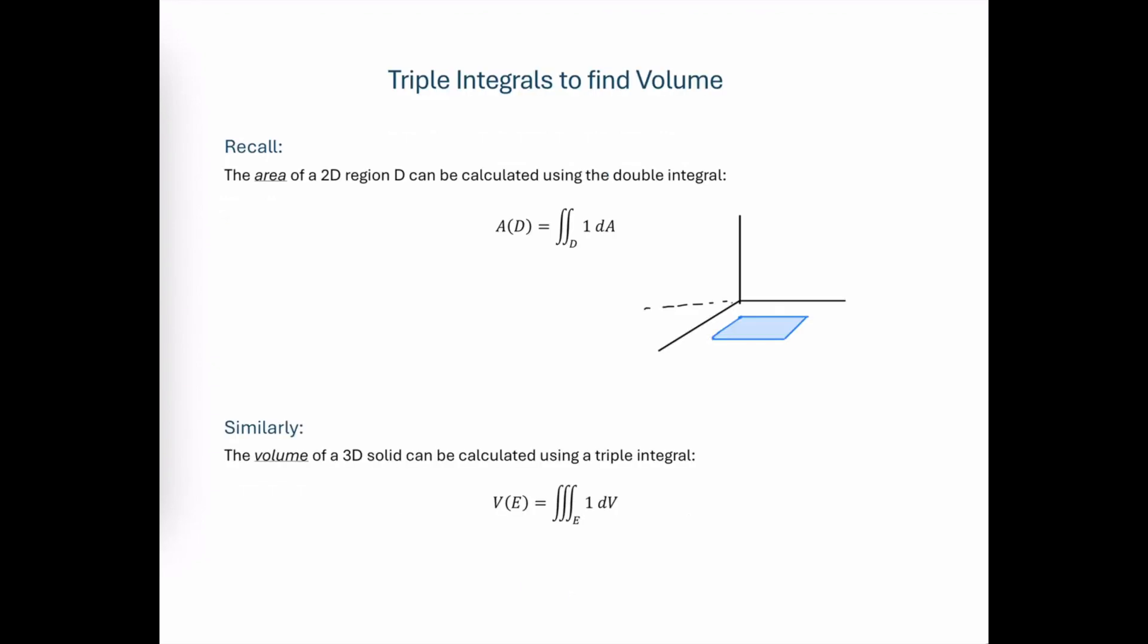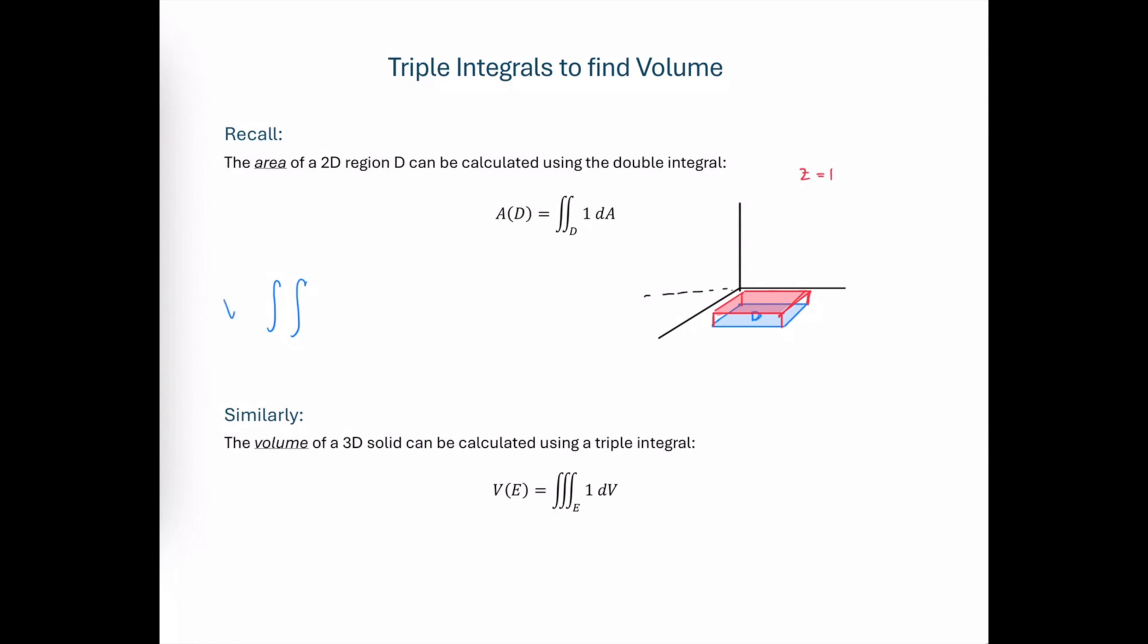Now let's remember that we've used this idea with double integrals over a domain region D. We can find the two-dimensional area of this domain region if we consider the ceiling function above it to be a flat plane, the z equals one plane. So now in this double integral that does give us the volume of this solid.